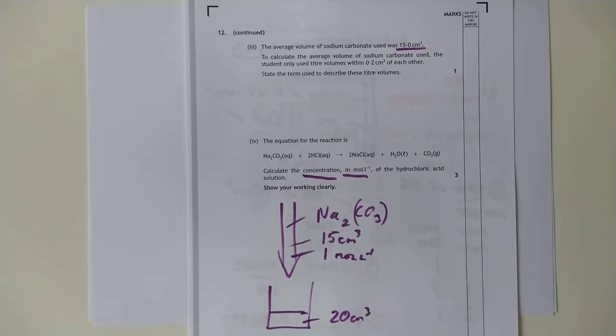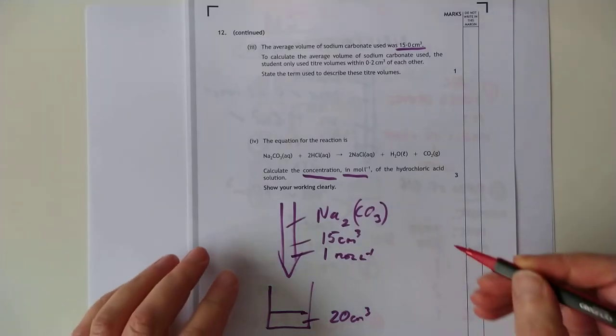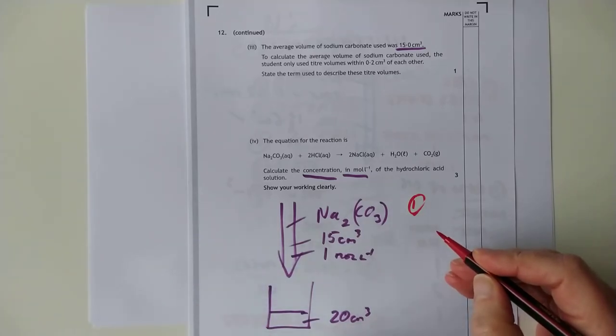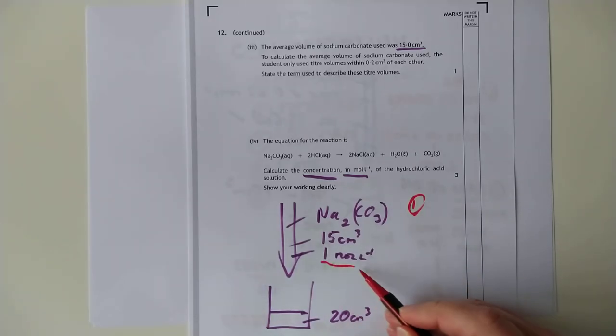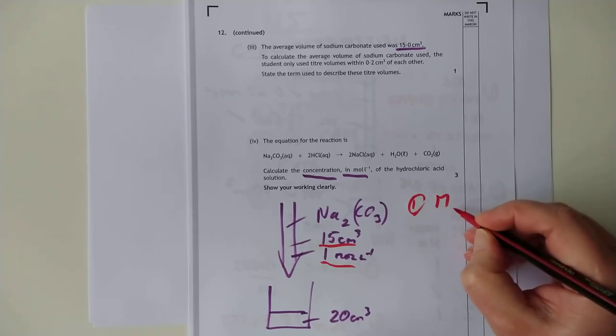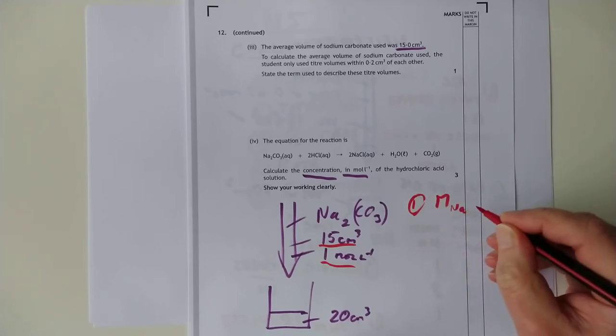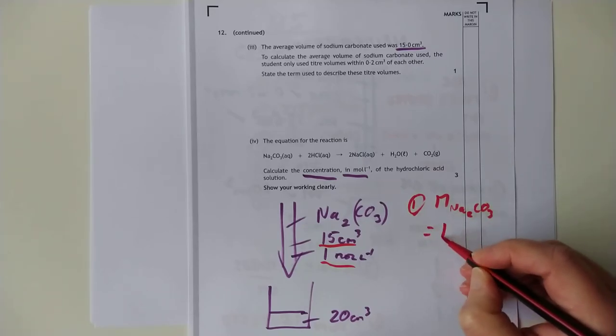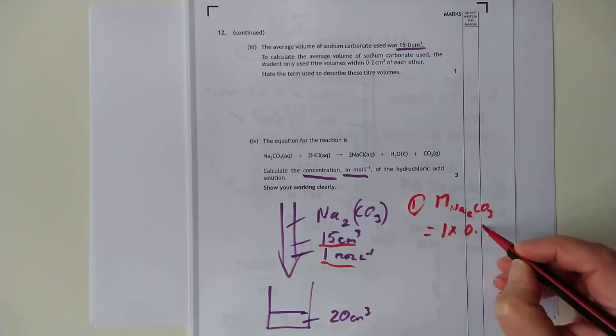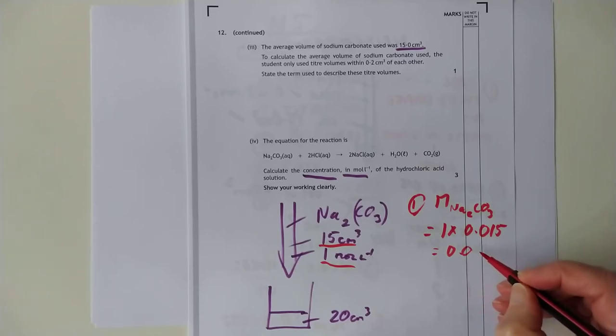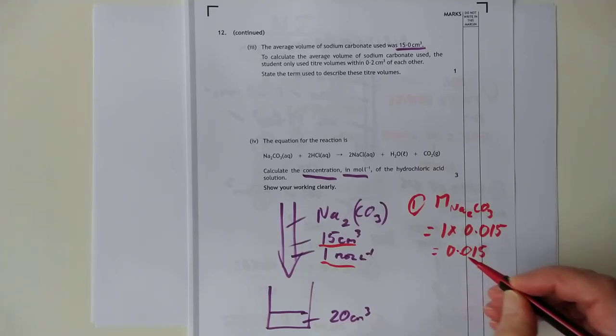Stage 1 was moles that dripped out of the burette. So, moles that dripped out of the burette is the concentration times the volume. There's the concentration, there's the volume. It's got to be in litres, though. So, moles of sodium carbonate, in this case, is 1 times 0.015, which is 15 divided by 1,000, which, of course, comes out to be 0.015. So, that's the moles of sodium carbonate.